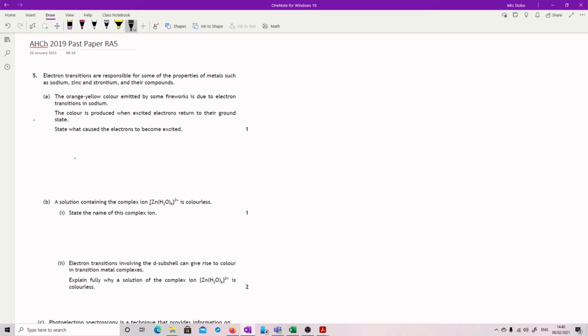Question five. Electron transitions are responsible for some of the properties of metals such as sodium, zinc and strontium and their compounds. The orange yellow color emitted by some fireworks is due to electron transitions in sodium. The color is produced when excited electrons return to the ground state. State what caused the electrons to become excited.